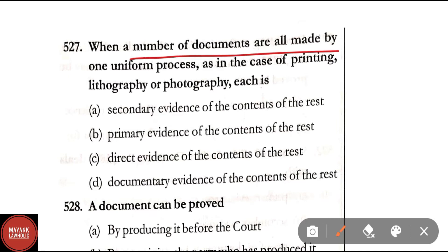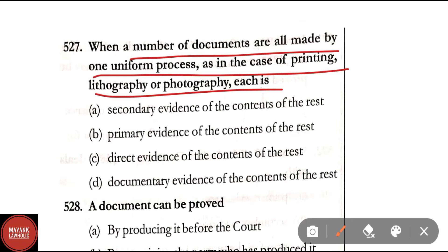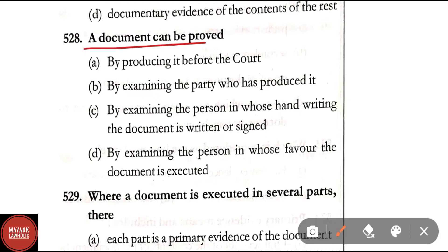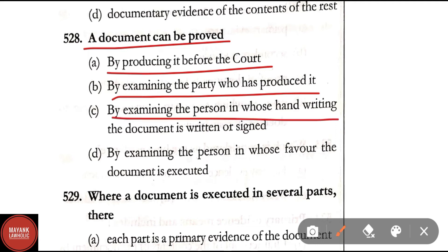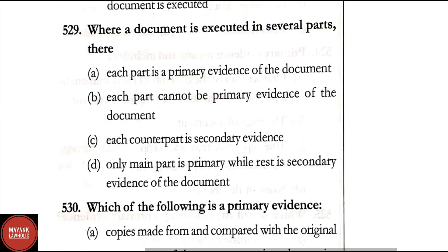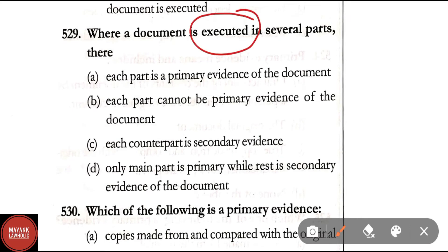Question 527: Where a number of documents are all made by one uniform process as in the case of printing, lithography or photography, each is primary evidence of the contents of the rest. Question 528: A document can be proved by — producing it before the court, examining the party who produced it, examining the person in whose handwriting the document is written or signed, or examining the person in whose favour it is executed. Correct answer is Option A — by producing it before the court. Question 529: Where a document is executed in several parts, each part is primary evidence of the document.